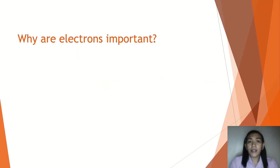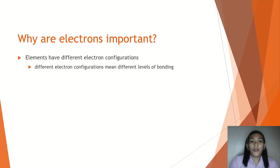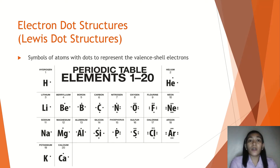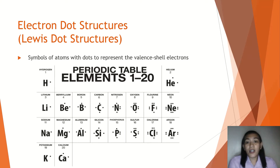Why are electrons important? These are important for bonding. Elements have different electron configurations, and it is needed for different levels of bonding. How do we usually express elements when bonding? We use electron dot structures or Lewis dot structures. These are symbols of atoms with dots that represent the valence shell electrons.